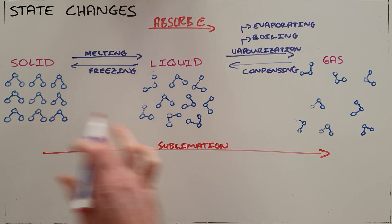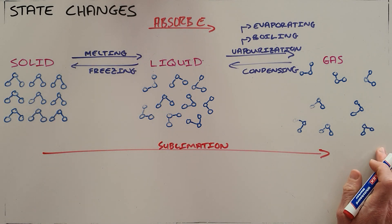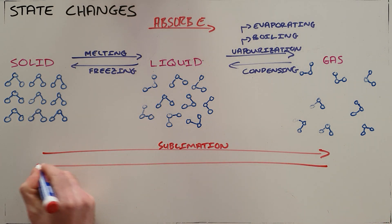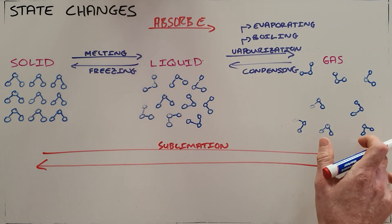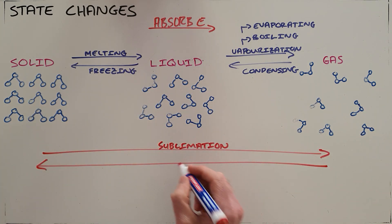Which converts into gaseous carbon dioxide through a process called sublimation. And then the inverse or the reverse of that process, where a gas goes directly from gas to solid, we call deposition.